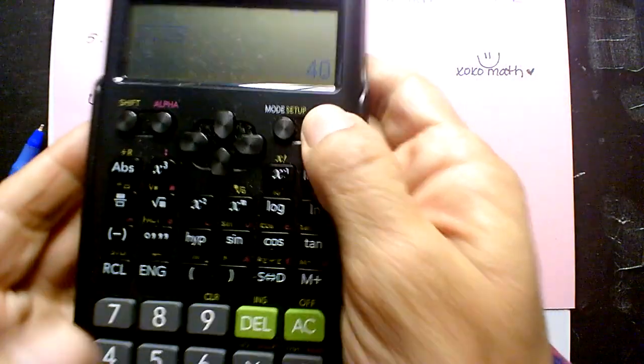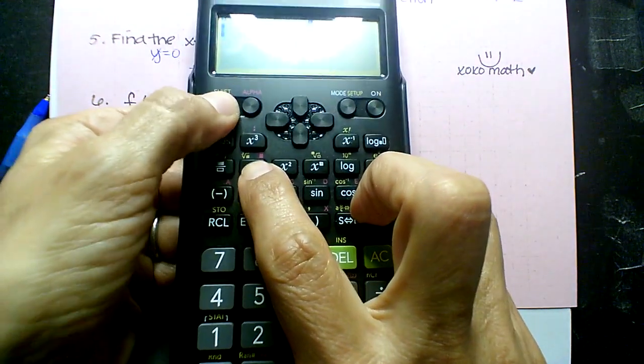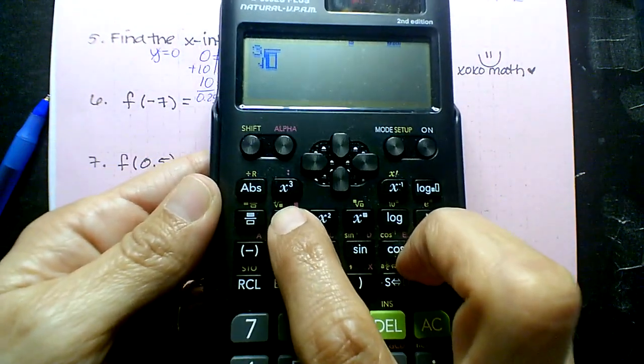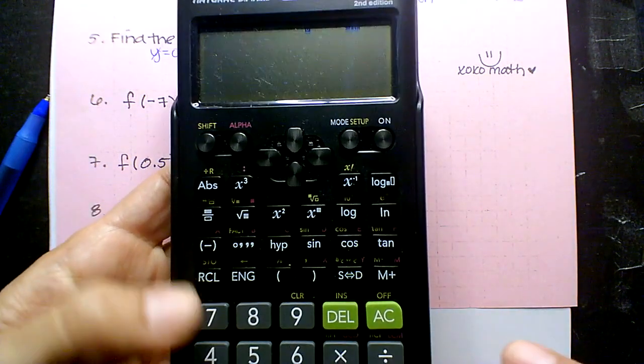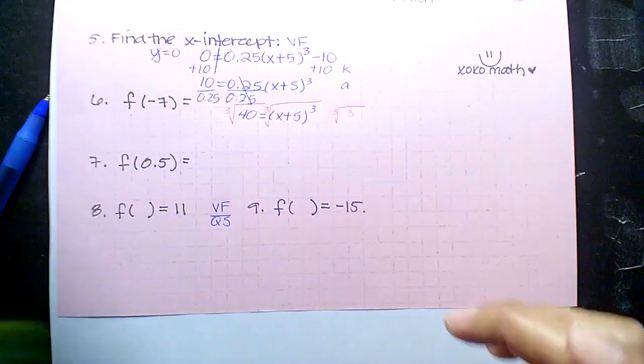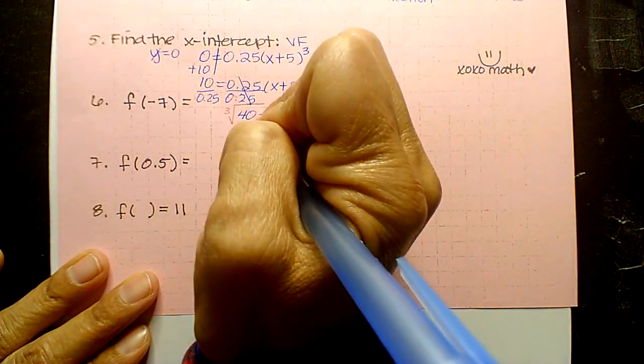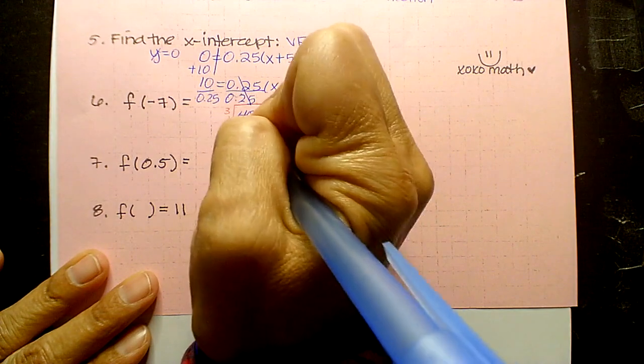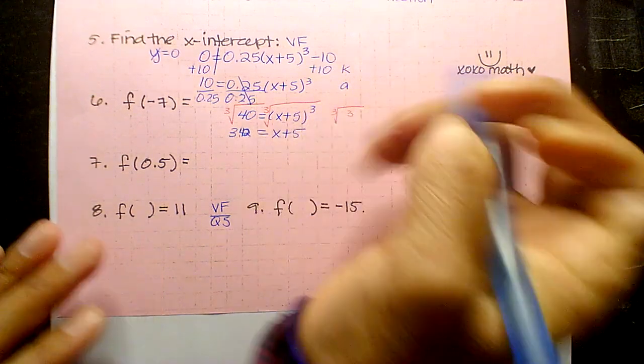So this is going to have the cube root 3, which is this button here, or you can use the other one. See that little 3, and then 40, and 3.42, and then this is just X plus 5.